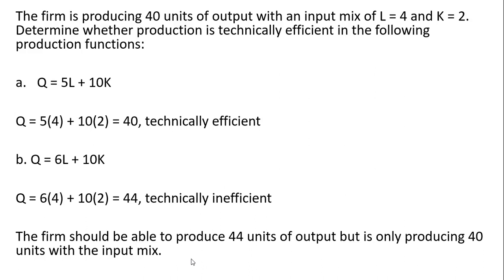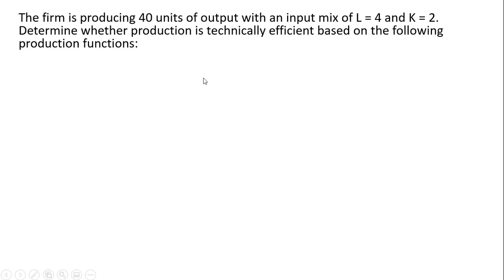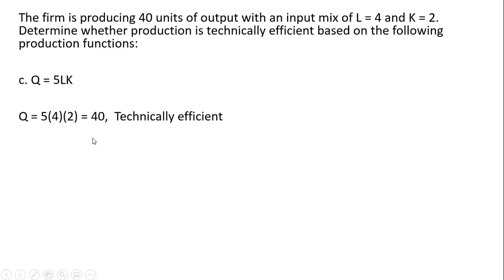Let's do a few other examples. Same setup: the firm is producing 40 units of output with L equals 4 and K equals 2. This time the firm's production process is described by this production function. Plugging 4 and 2 into the production function, we see the firm should be able to produce 40 units, and that's what it's producing. So this is technically efficient — the firm is getting the most it can from its resources.